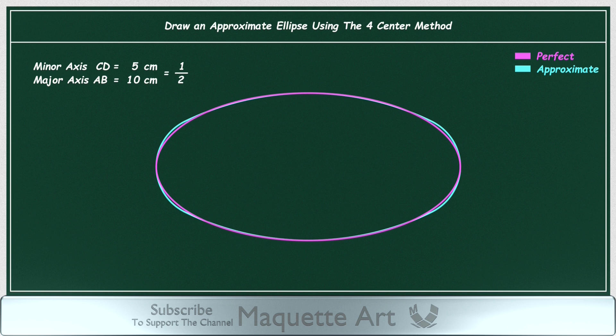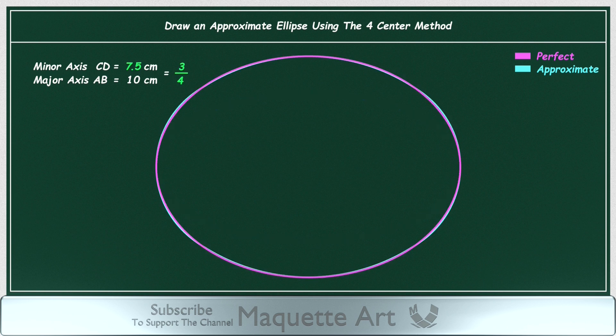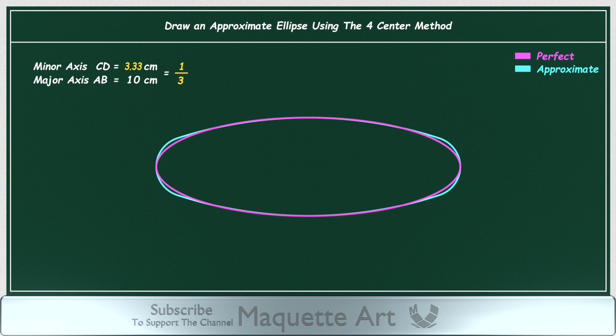This error decreases when the minor axis becomes bigger, or more accurately, when the ratio between the minor axis to the major axis increases. For example, when the ratio is 3 over 4, you can see that the error is much smaller than before. On the other hand, when this ratio decreases — for example when the ratio is 1 over 3 — the error becomes much bigger and visible when comparing it to a perfect ellipse. So basically, you can use this method if the ratio is bigger than 1 over 3, and you will get acceptable results.